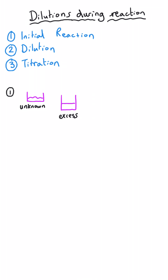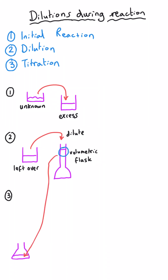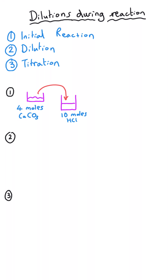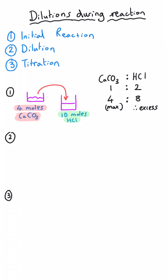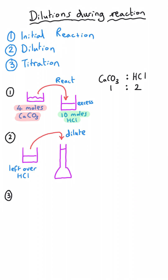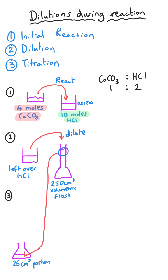The most complicated back titration questions involve three separate steps. First, the unknown substance reacts with the excess substance. Then the leftover excess is diluted in a volumetric flask, and a portion (aliquot) of this diluted sample is taken out for the titration. For example, solid calcium carbonate thought to contain four moles is added to ten moles of HCl. The leftover HCl is transferred to a 250 cm³ volumetric flask, and a 25 cm³ portion is taken out and titrated with sodium hydroxide.